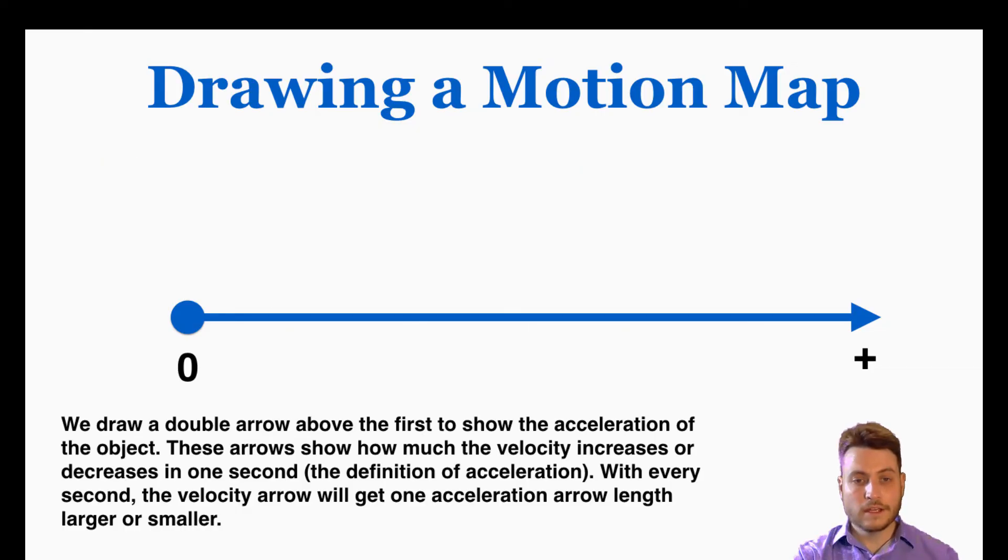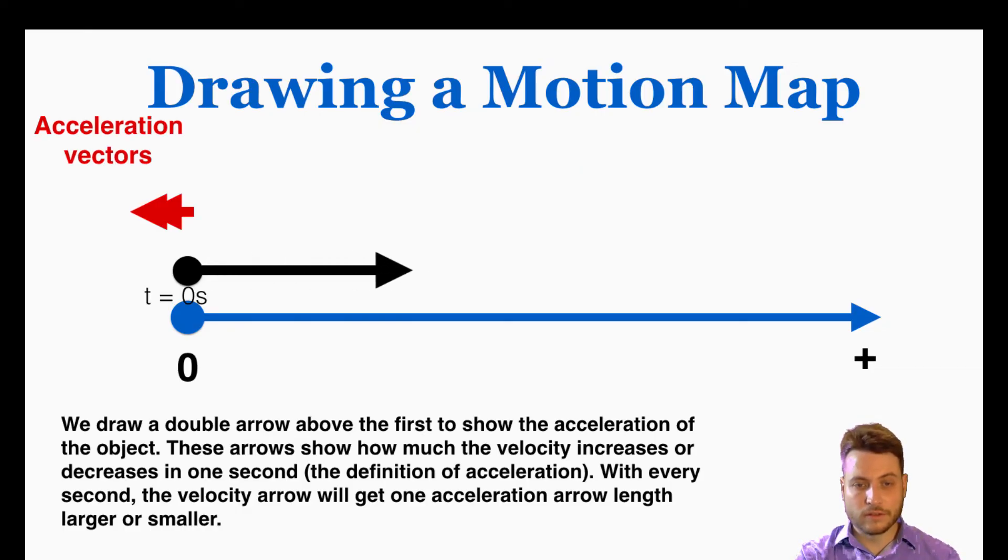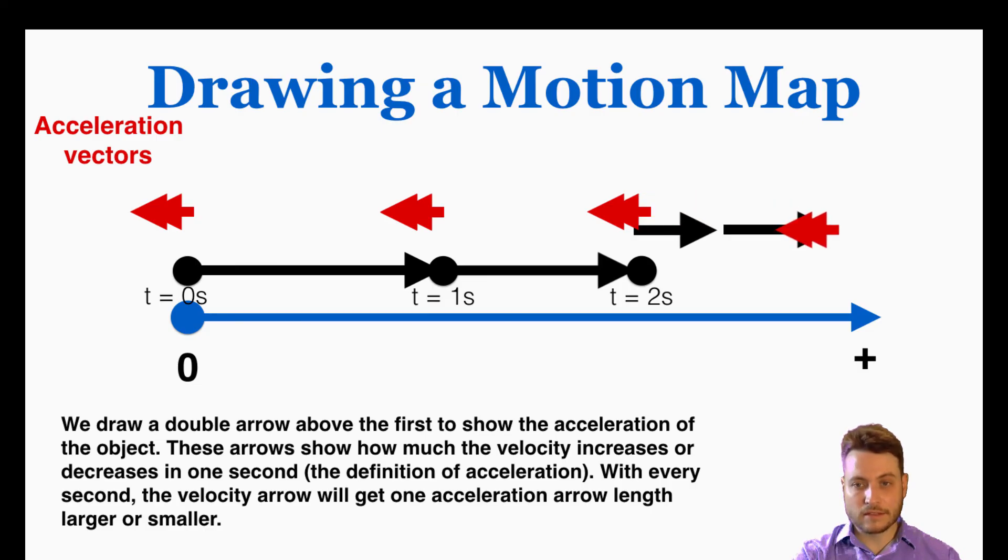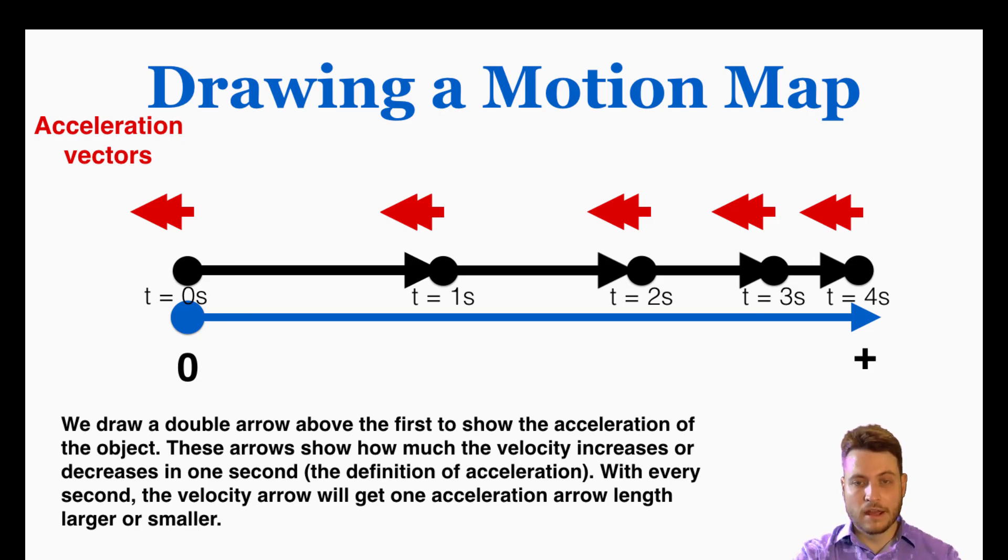If the acceleration arrow is pointing in the opposite direction of the velocity, like I'm imagining that this is starting with a very large positive velocity, if it's pointing in the opposite direction, that means that the acceleration is actually slowing the object down. It's getting slower over time. So if I combine the acceleration arrow with the velocity arrow like this, you can see that it's pushing back against it. And so the new velocity will be smaller than before, and it keeps pushing back against it. So it becomes smaller and smaller and smaller. So acceleration arrows pointing in the opposite direction show you how the velocity is getting smaller over time by that exact amount. And that's everything that you have to know about drawing a motion map.